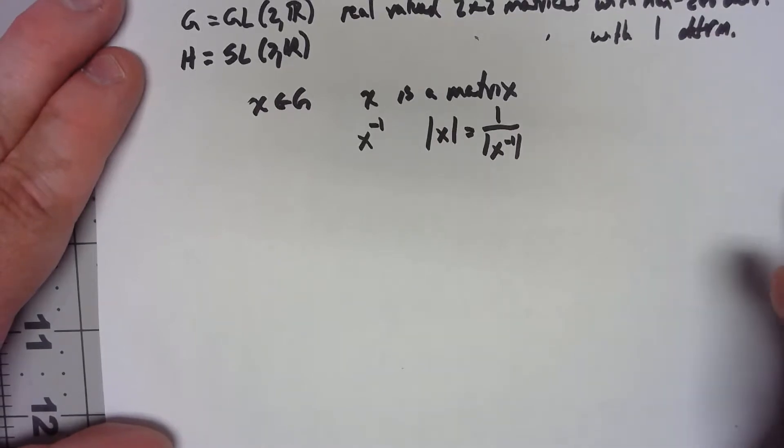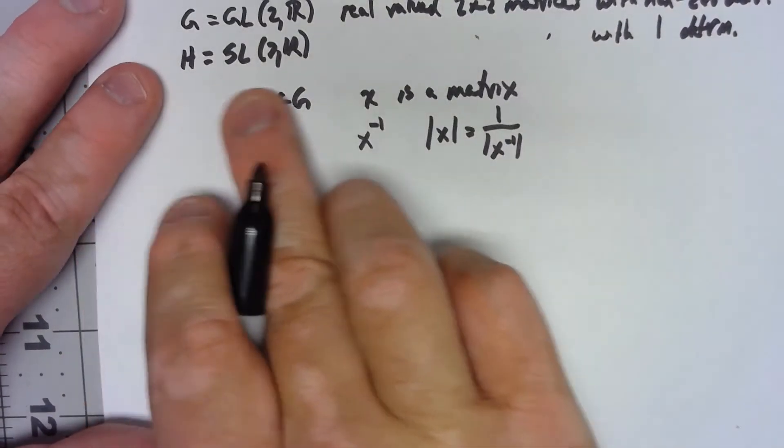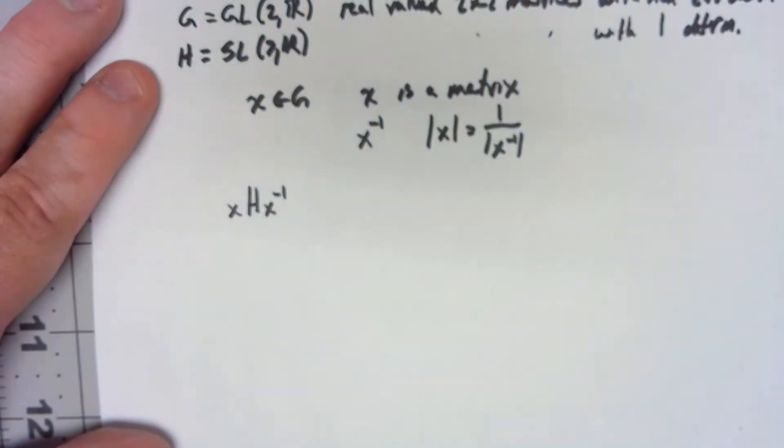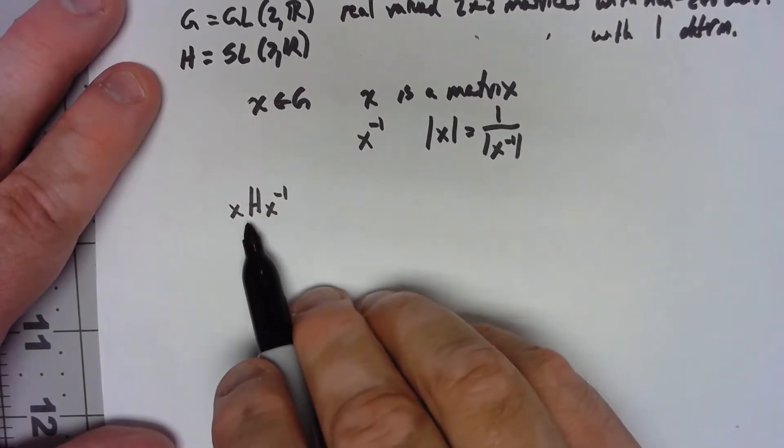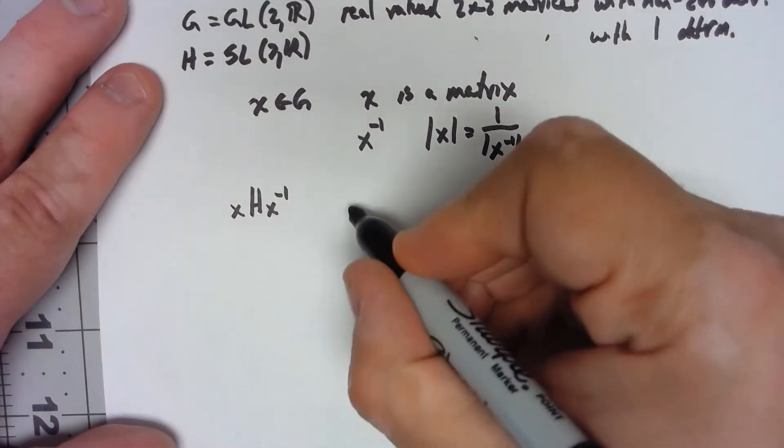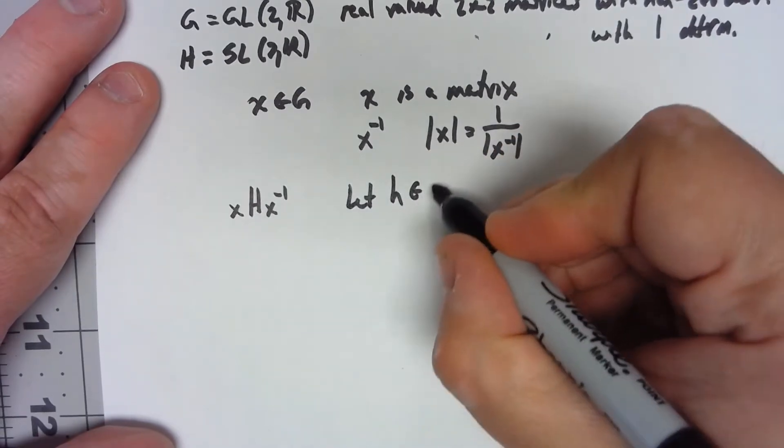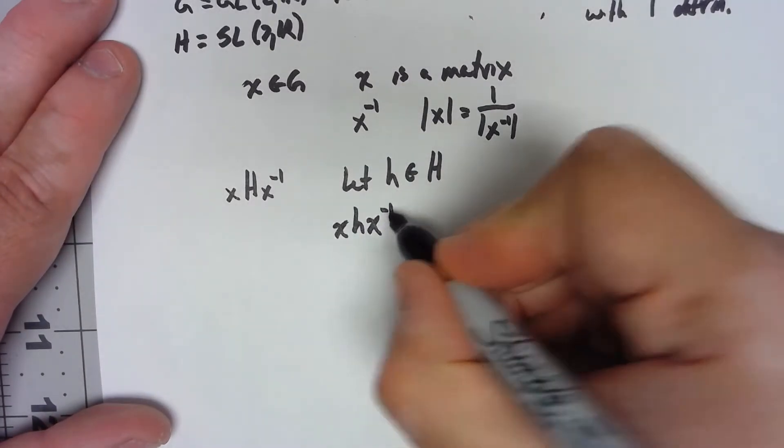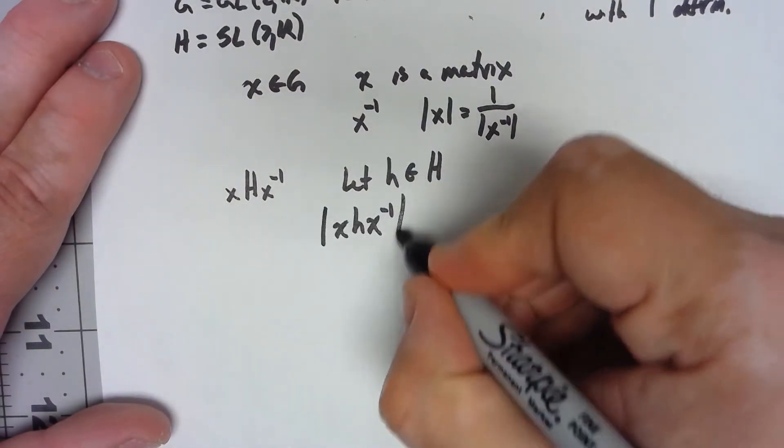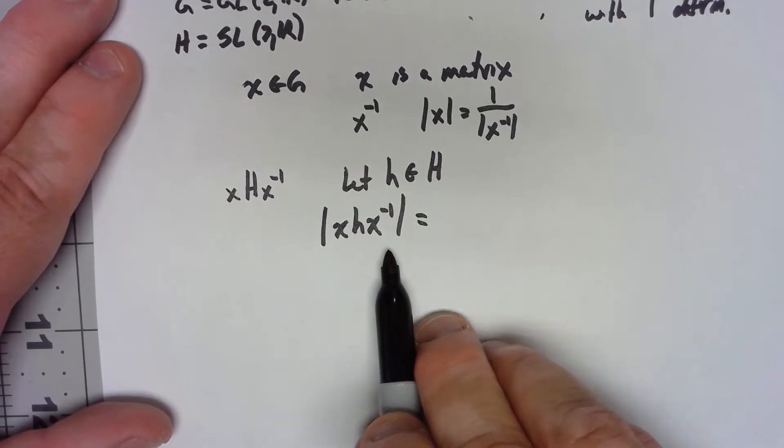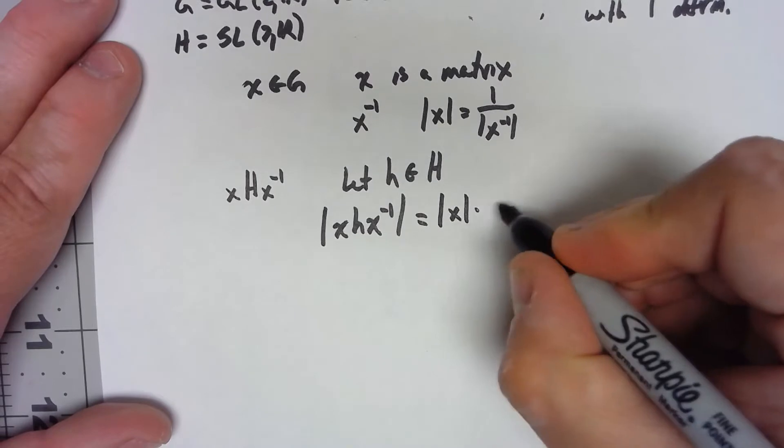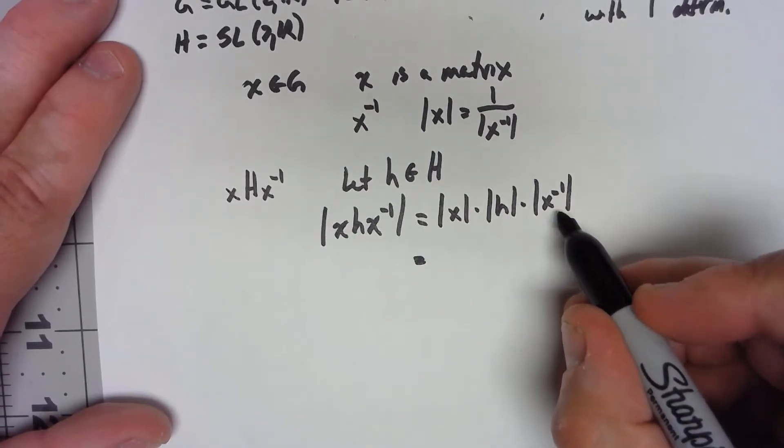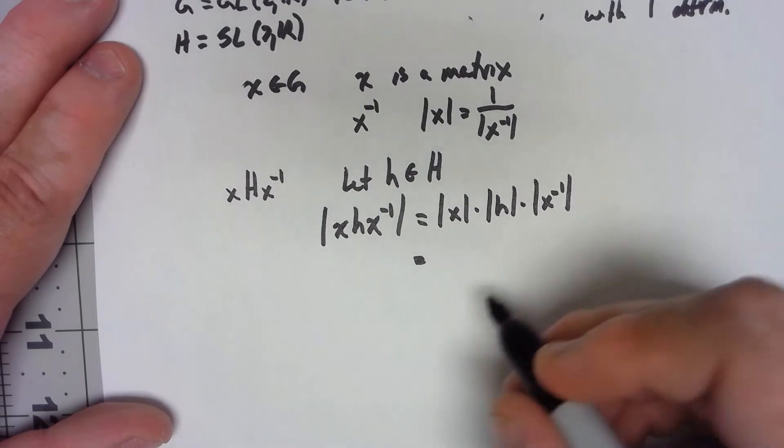Okay, so if I take anything here, if I take XHX inverse, let's let h be any matrix in capital H, and I look at XhX inverse, what's the determinant of that? Well, when I take the determinant of a product of matrices, I can take the product of each matrix individually and multiply them.